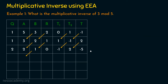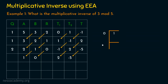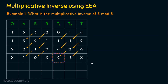Let's proceed further. Shifting: A takes 1, B takes 0, T1 takes 2, T2 takes −5. Now run the algorithm: A mod B is 1 divided by 0 — we encounter a situation where we cannot proceed further. We cannot determine the quotient, remainder, or value of T. This is the place where we stop. Whatever is in T1 — the value is 2 — that is the answer. So 2 is the multiplicative inverse of 3 mod 5.